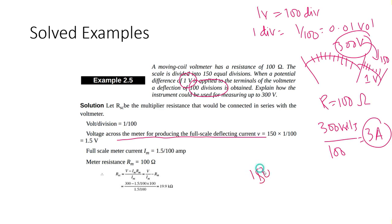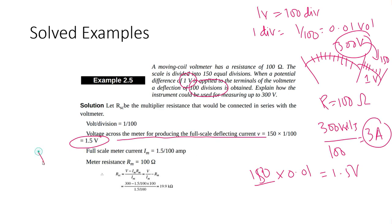The voltage across the meter producing full scale deflection is 150 multiplied by 0.01, which equals 1.5 volts. We want 1.5 volts across this system, and our resistance is 100 ohm.